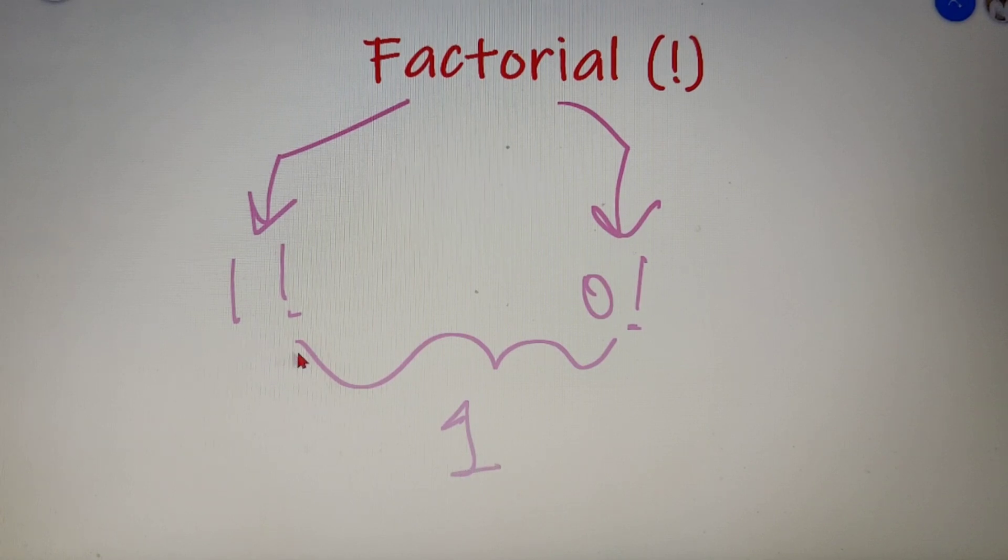Now there are two special cases in factorial. One is 1 factorial and the second is 0 factorial. Now both these numbers are taken as 1. So the value of 1 factorial is also 1 and the value of 0 factorial is also 1.